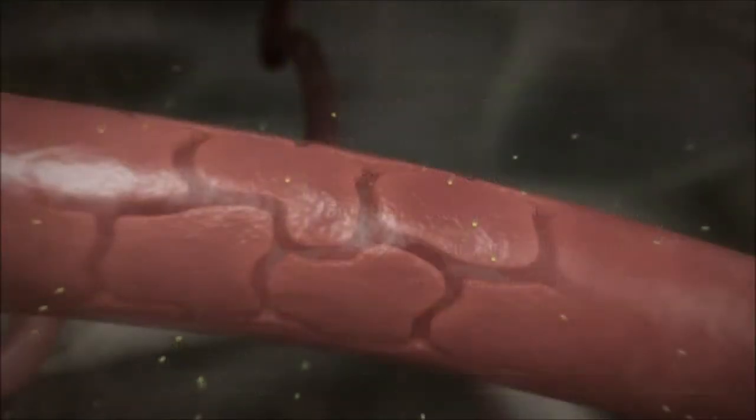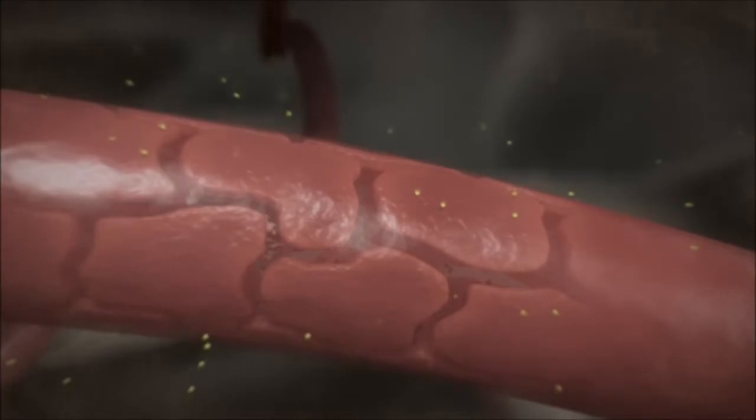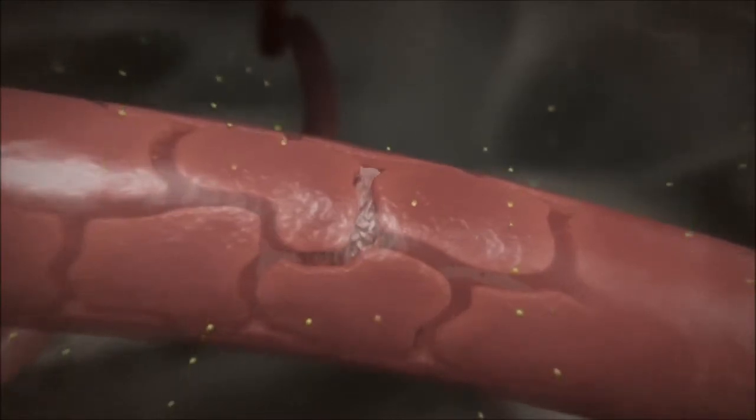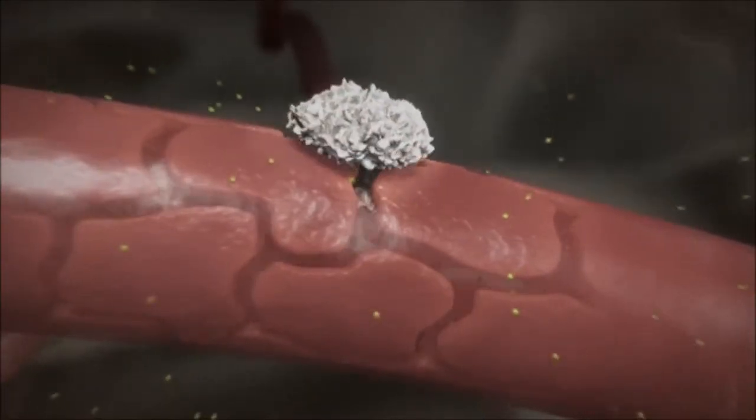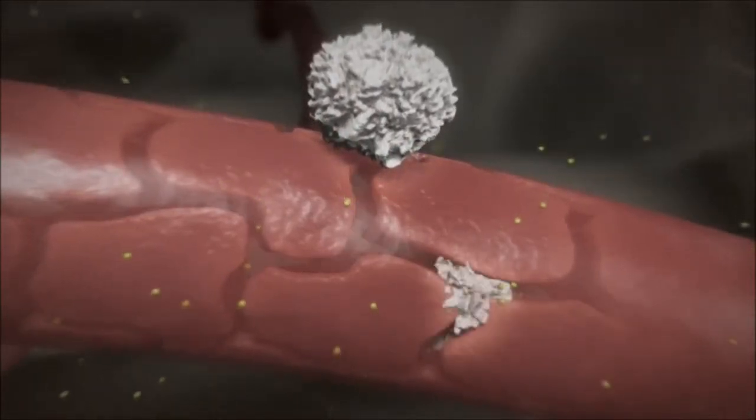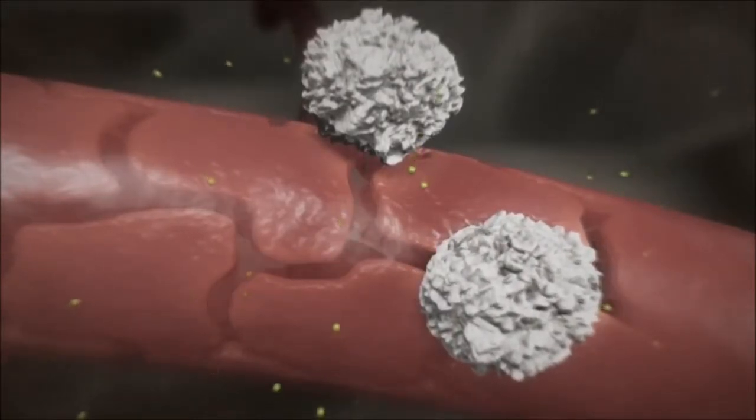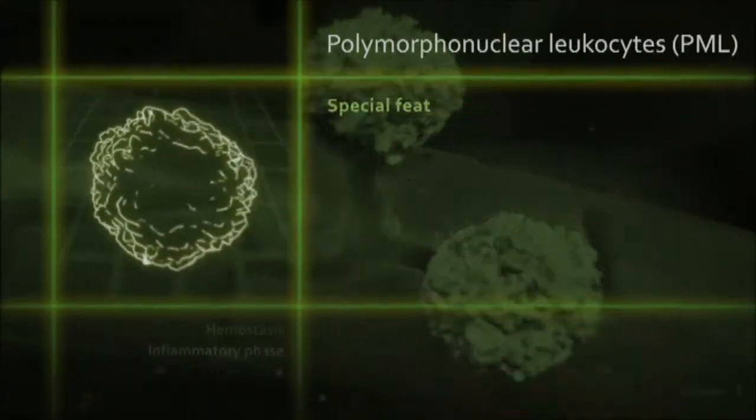On the inside of the vascular walls, endothelial cells promote the attachment of polymorphonuclear leukocytes from the bloodstream. These leukocytes, also known as PMLs, squeeze themselves through the gaps between the endothelial cells. Once they have digested the basal lamina using proteases, they are free to enter the wound.